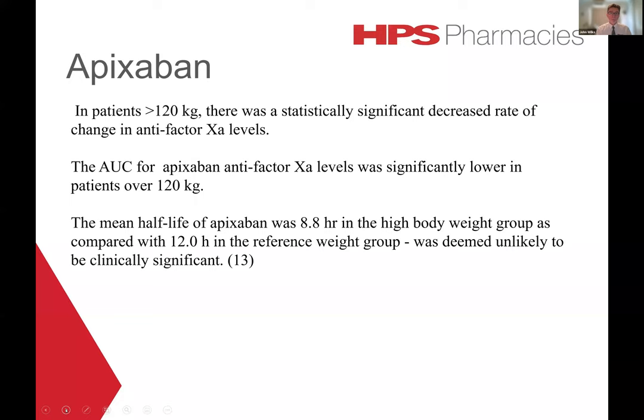For apixaban, the research has shown that in patients weighing greater than 120 kilograms, there was a statistically significant decrease in the rate of change in anti-factor Xa levels. Further, the area under the curve for apixaban anti-factor Xa levels was significantly lower in patients over 120 kilograms. The mean half-life of apixaban was 8.8 hours in the high body weight group compared to 12 hours in the reference group, though this difference was deemed unlikely to be clinically significant.